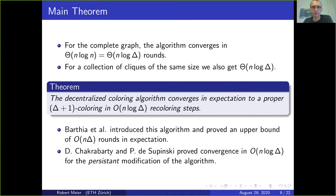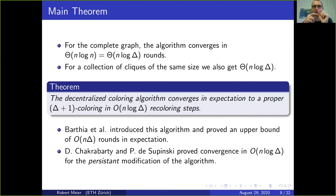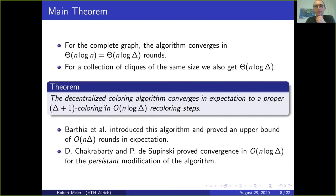Let me briefly discuss previous work. Barthea et al. introduced this algorithm and proved an upper bound of order n delta rounds in expectation. Chakravarti and Desultpinsky proved convergence in order n log delta for the persistent modification, where we choose a vertex and recolor it repeatedly until it has no neighbors of the same color. They raised the question whether the original variant achieves the same bound, which we prove here.